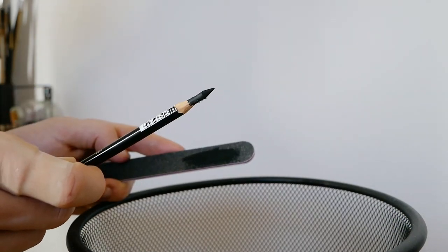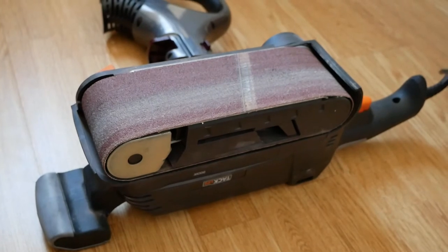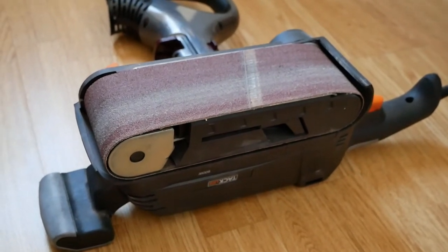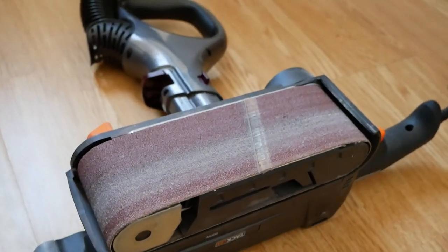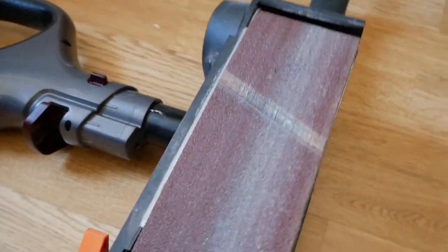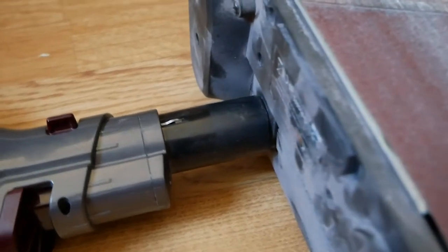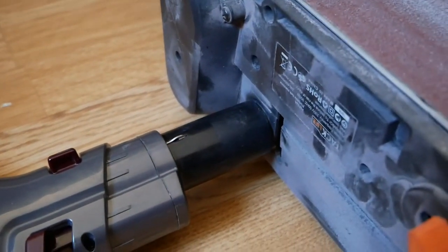This is the sander that I use and the link for it is in the video description. To safely sand the pastel to a point with my sander machine, I first make sure that the outlet is attached to my hoover. I then turn my hoover on first before sanding anything down and leave it on until I'm finished.